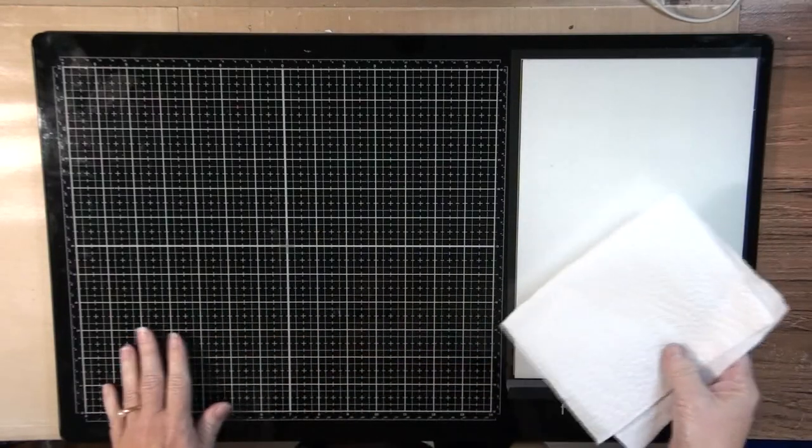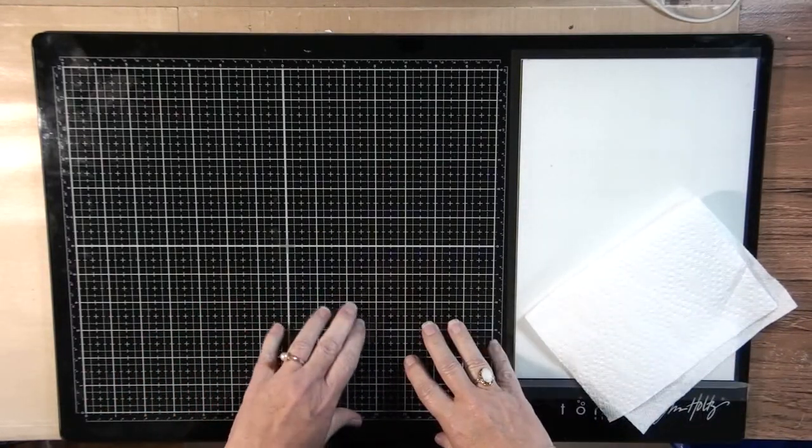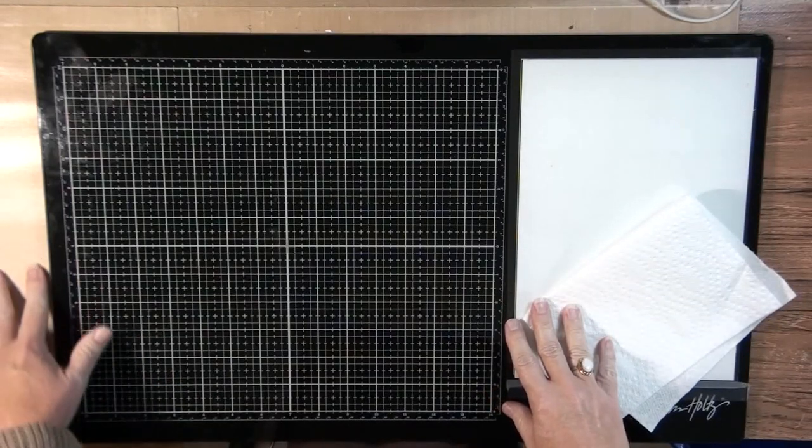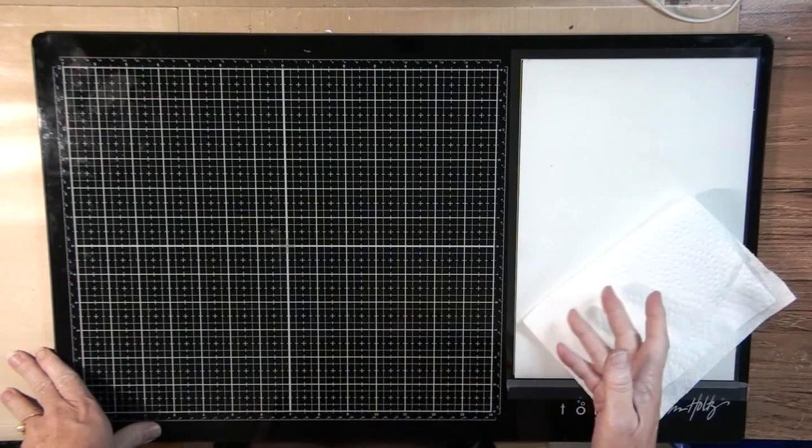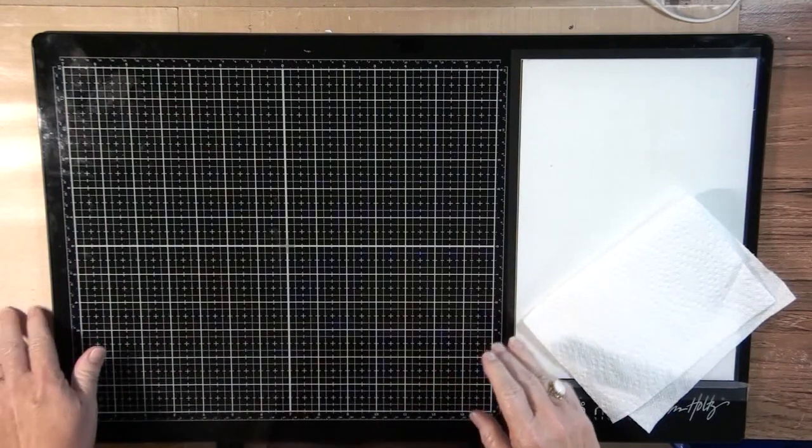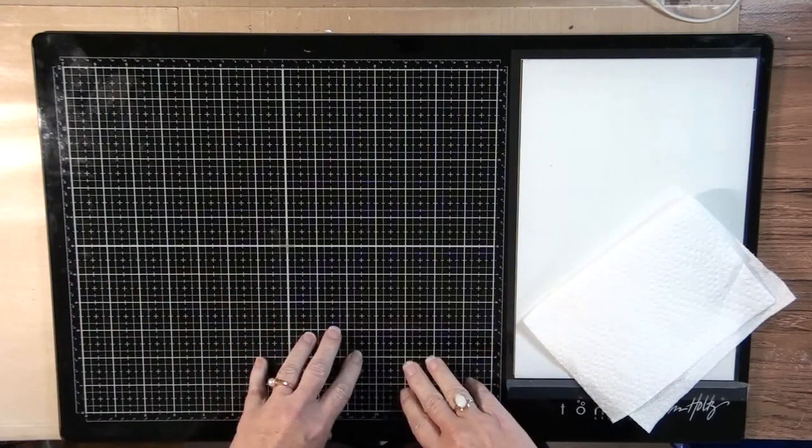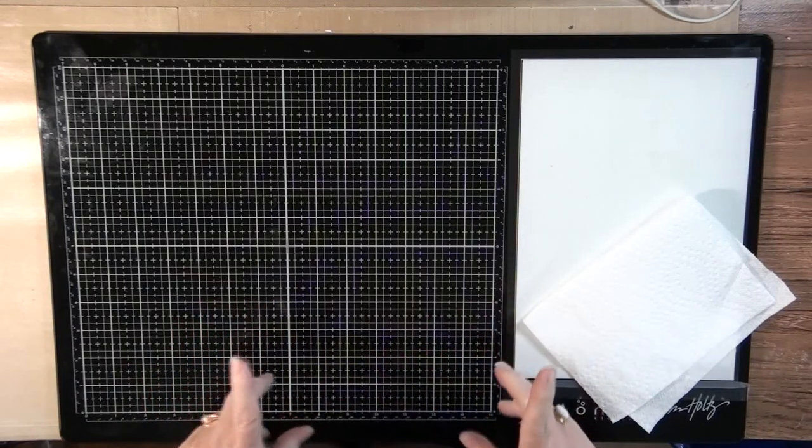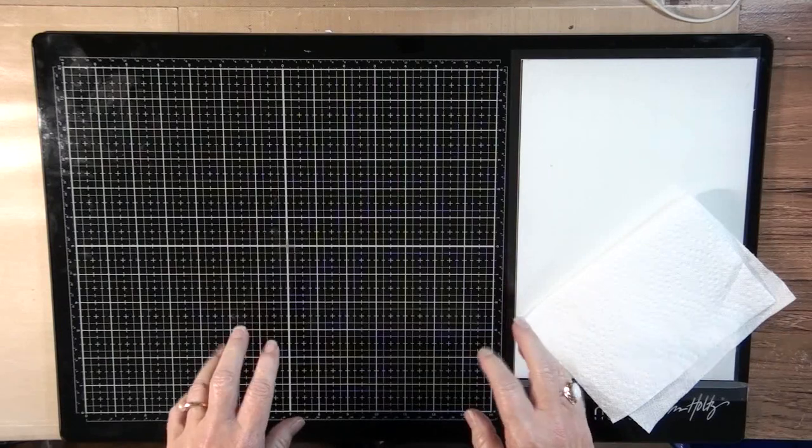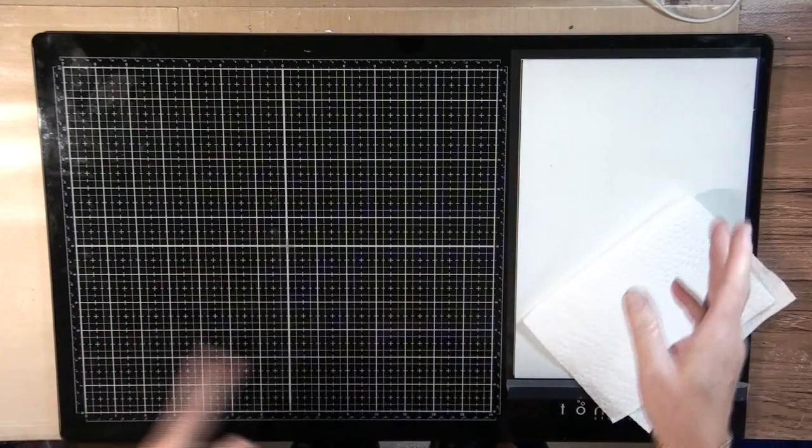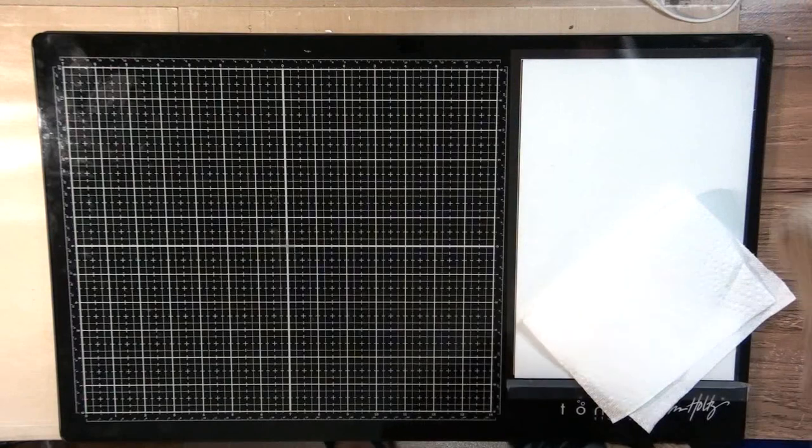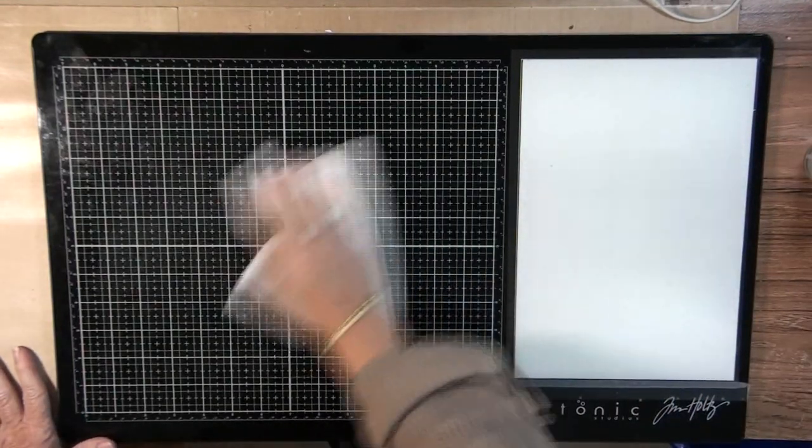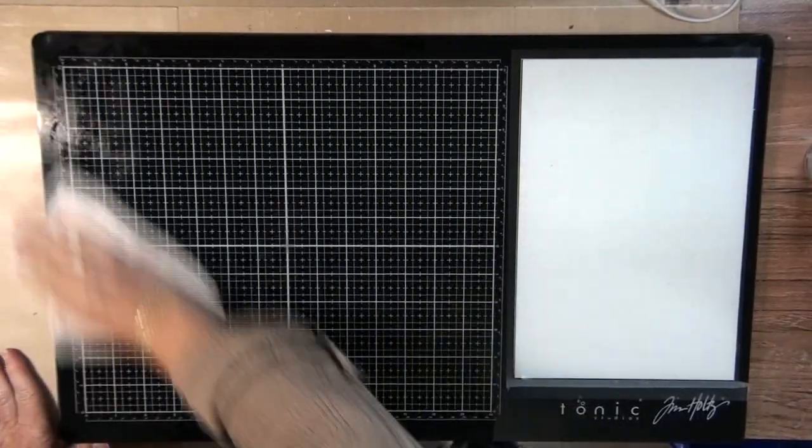One, your glue doesn't rub off like it would on your craft mat. On your brown craft mat, you can usually just wipe it up. It doesn't stick because it's Teflon coated. This is not the same. Now, having said that, it does come off really easy. If you're using a glue that is water-based, just take your spritzer, give it a spritz, and then paper towel it off. And it cleans up beautifully.